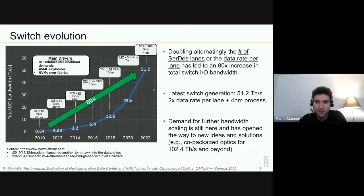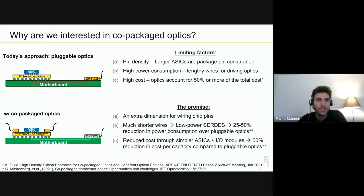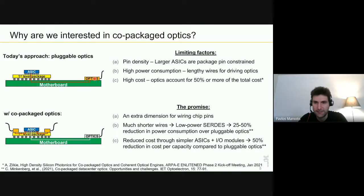This has opened the way to new ideas. On the top left you can see a schematic of how we build switches today: we have the motherboard, the first-level package, on top of that the switch ASIC, then traces through the motherboard, and we have the optics at the edge. The problem with this approach is that we are starting to become package pin-constrained — as we increase the size of the ASIC, we have so many pins that we don't have enough space to route them through the first-level package.